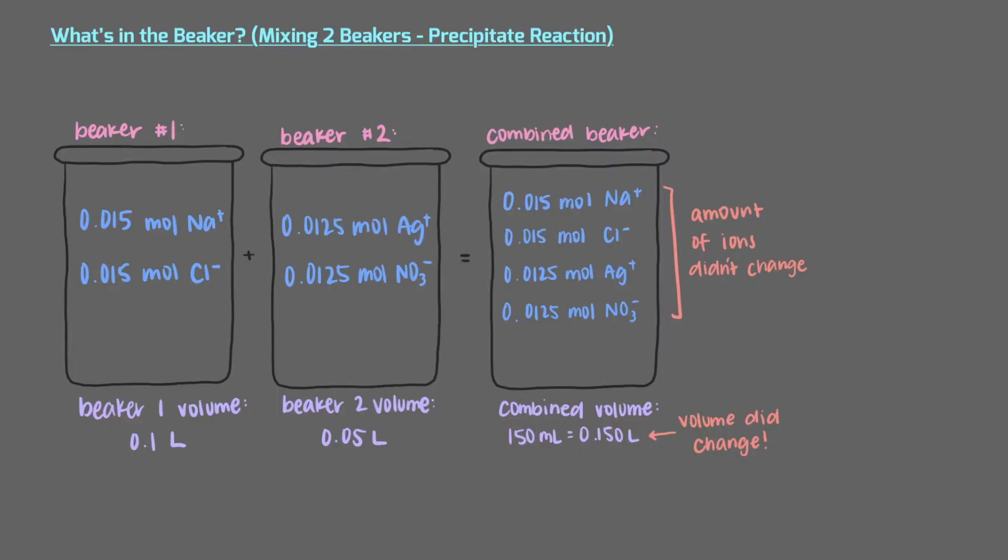Concentration, whether given in molarity or in grams per milliliter, changes when volume changes. In this case, the number of moles of each ion stays the same, but we change the total volume of the solution. The change in volume changes the concentration of each ion in our beaker.